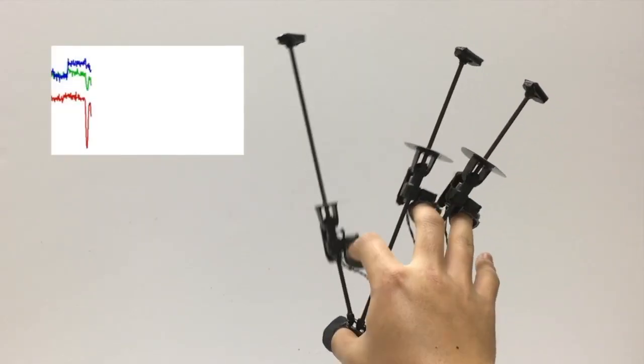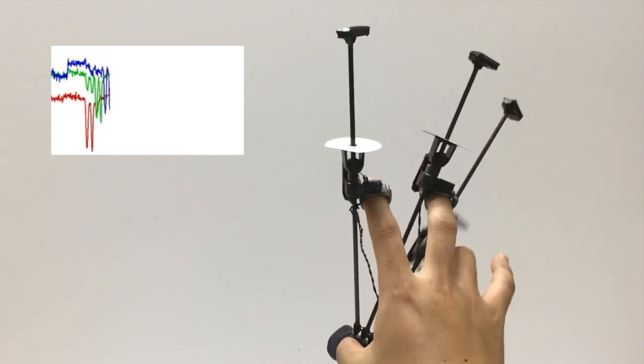Time-of-flight proximity sensors at the top of each rod provide finger-to-thumb distance information, and a 9-axis IMU provides thumb orientation sensing.